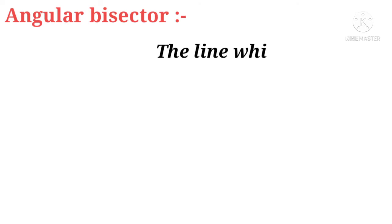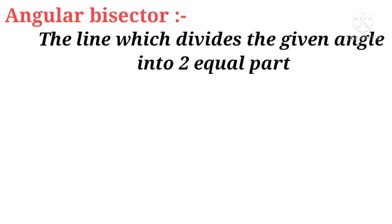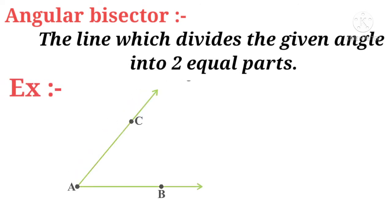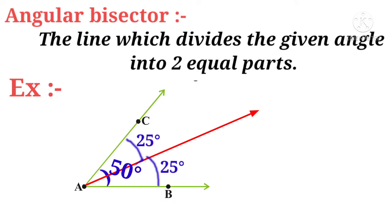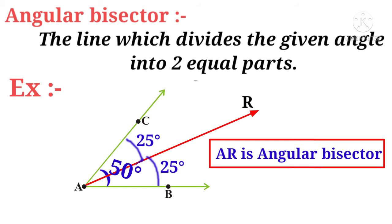The line which divides the given angle into two equal parts is called an angular bisector. For example, take an angle CAB measured as 50 degrees. If a red line is drawn in between the 50-degree angle so that the angle is divided into two equal angles of 25 degrees and 25 degrees, then that red line AR is called the angular bisector.